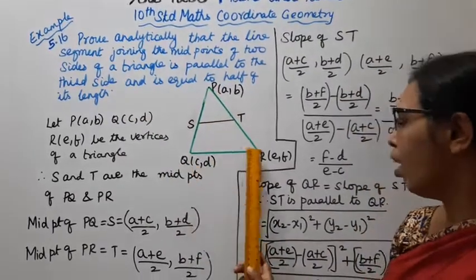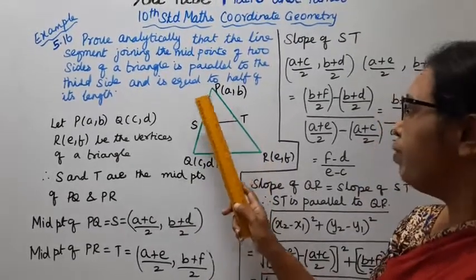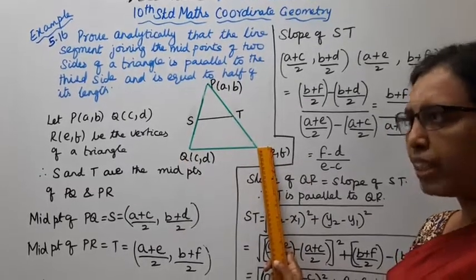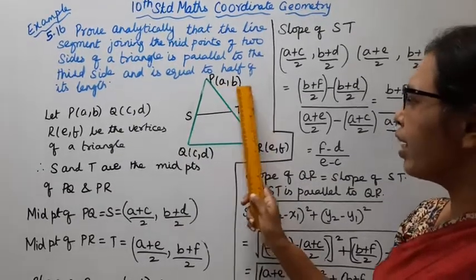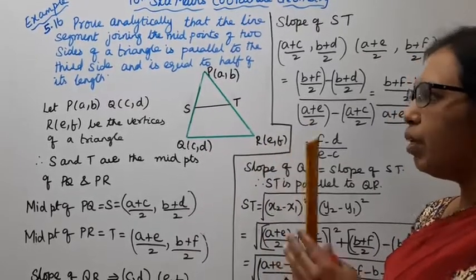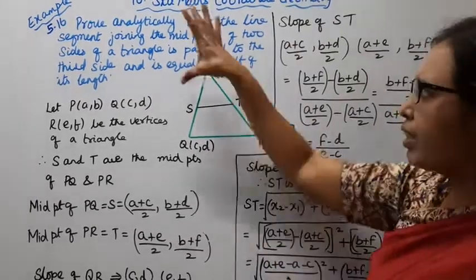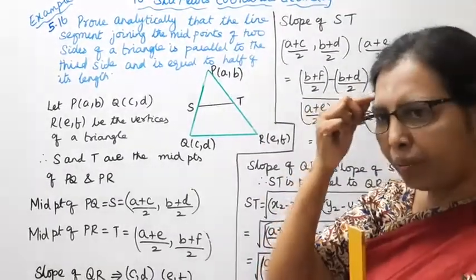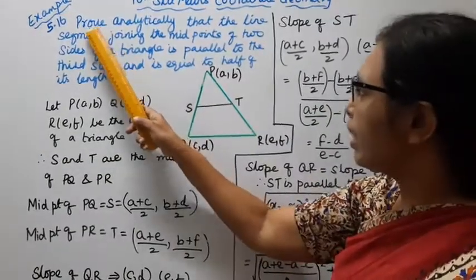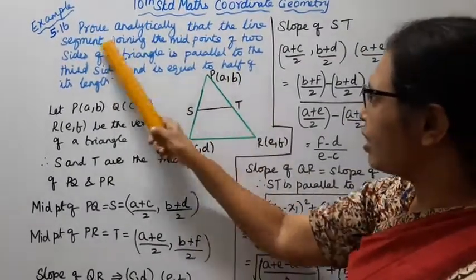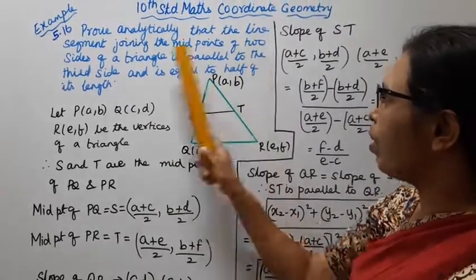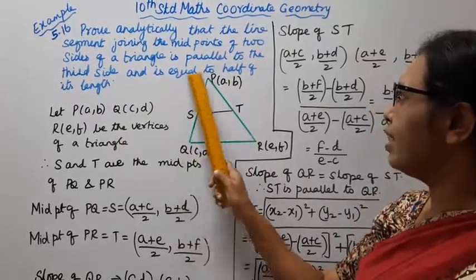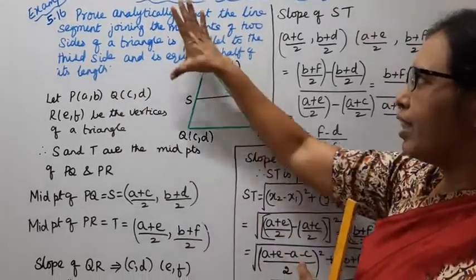Consider triangle PQR. The vertices of triangle PQR are labeled with coordinates A, B and C, D and E, F. The problem states: the line segment joining the midpoints of two sides of a triangle is parallel to the third side and is equal to half of its length.